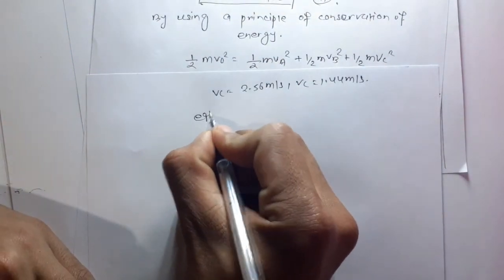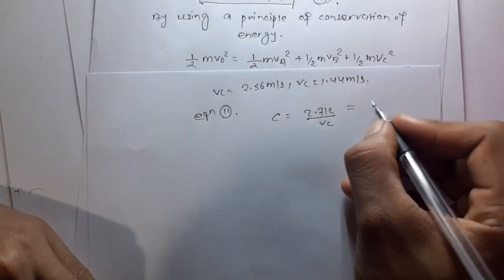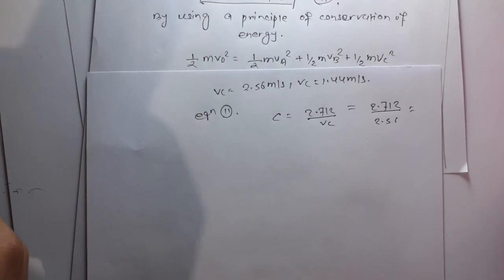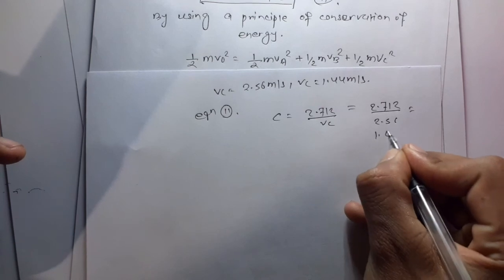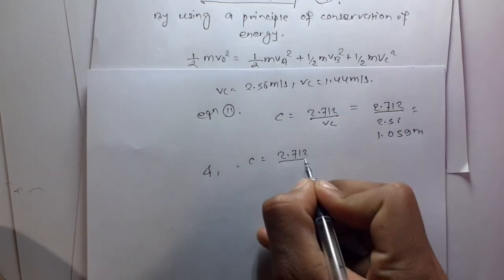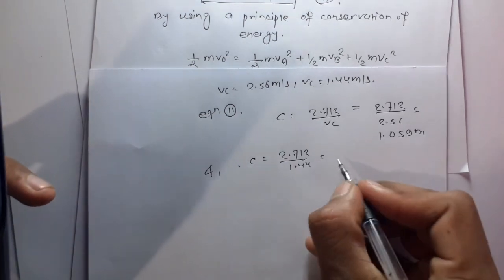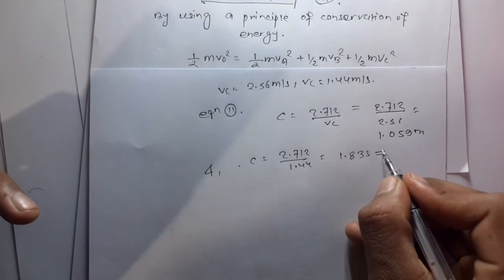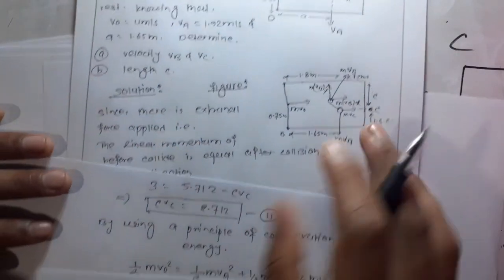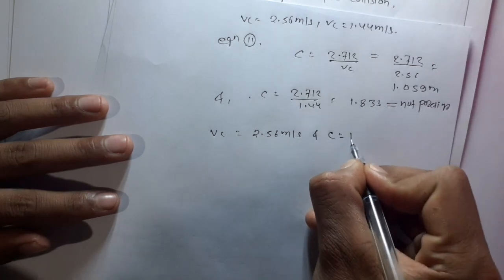From equation number 2, C equals 2.712 divided by vBC. When vBC equals 2.56, then C equals 2.712 divided by 2.56, which gives 1.059 meters. When vBC equals 1.44, then C equals 2.712 divided by 1.44, which equals 1.883 meters — this is not possible because the total length is 1.5 meters. So vBC equals 2.56 meters per second and C equals 1.059 meters.